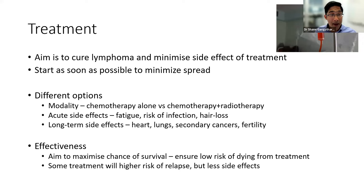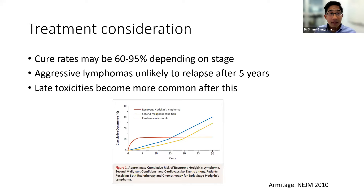Our goal is to maximise chances of survival — make the cancer go away and not come back — while reducing the risk of dying from our treatments. We accept that some treatments have a higher risk of relapse, but in some scenarios that might be okay if the side effects are less and it's better tolerated. Cure rates can be as high as 60 to 95%, based on risk factors and staging. After five years, if the disease hasn't come back, it's very unlikely to — that's when we need to take into account late effects of treatment.